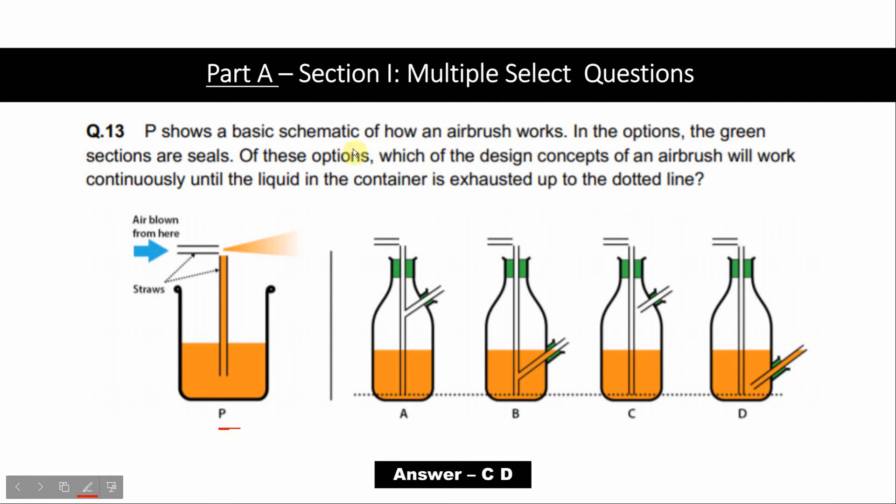In the options, the green sections are seals. Of these options, which of the design concepts of an airbrush will work continuously until the liquid in the container is exhausted up to the dotted line?